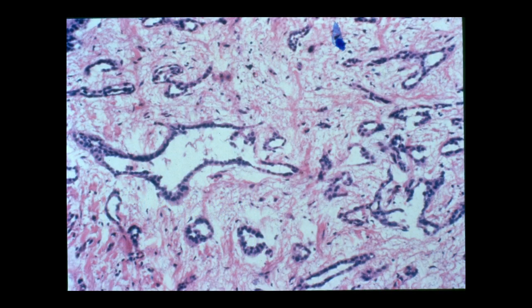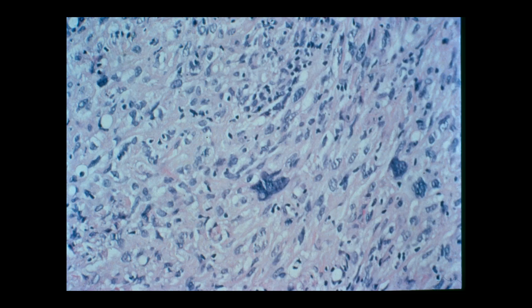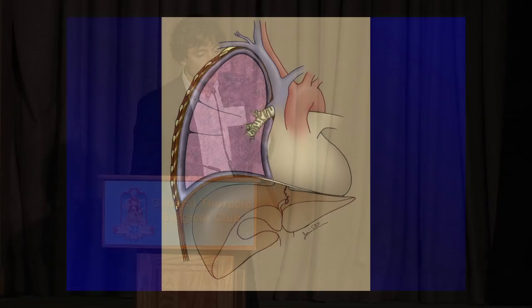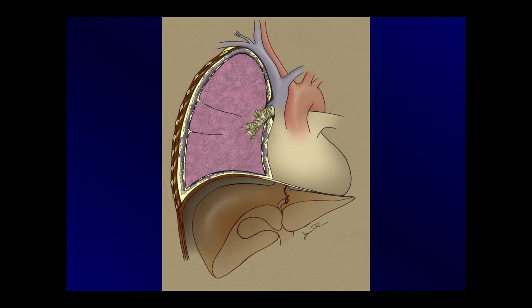Dr. Sugarbaker already showed you some of this, and I'd like to go into the staging system without boring you with TNM. Basically, this is your right lung with three lobes. The tumor likes to start on the parietal pleura, which is counterintuitive because you're inhaling asbestos fibers — you'd think it would start on the visceral pleura. But it starts on the parietal pleura, possibly because the fibers continuously irritate it, causing what I'd call a scar gone wild. It then progresses to the visceral pleura and into the fissures, contracting the lung.